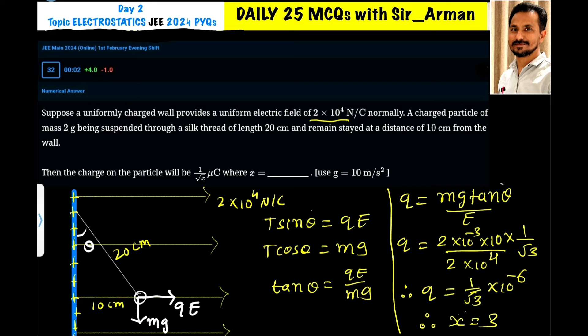Here the value of mass is 2 grams, so it is 2×10⁻³. The value of g is 10 and the value of electric field is 2×10⁴ N/C. Now, what is the value of tan θ?